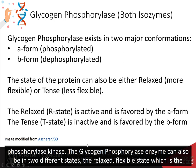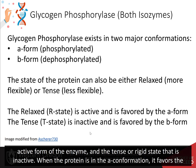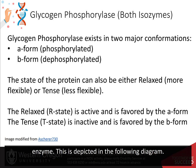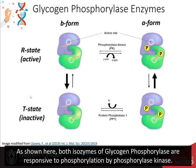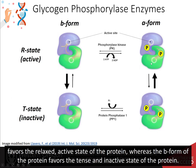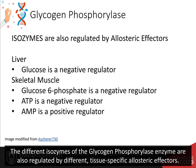The glycogen phosphorylase enzyme can also be in two different states: the relaxed flexible state, which is the active form of the enzyme, and the tense or rigid state that is inactive. When the protein is in the A conformation, it favors the relaxed and active state. Therefore, phosphorylation of glycogen phosphorylase leads to an increase in activity. As shown in the diagram, both isozymes of glycogen phosphorylase are responsive to phosphorylation by phosphorylase kinase. Phosphorylation causes a shift from the B form to the A form, favoring the relaxed and active state, whereas the B form favors the tense and inactive state. The different isozymes are also regulated by different tissue-specific allosteric effectors.